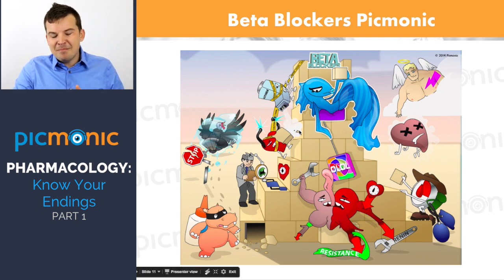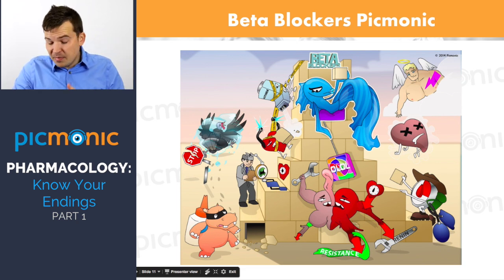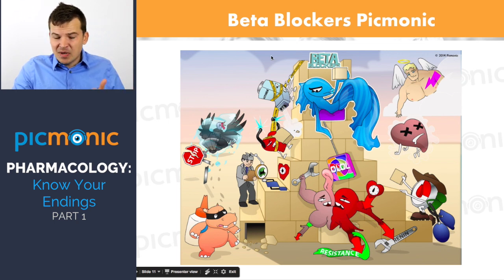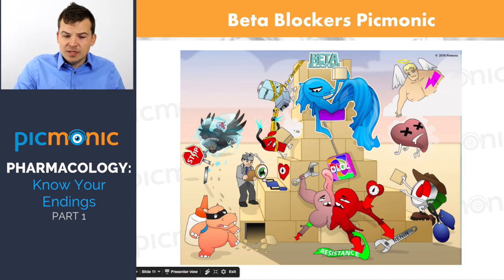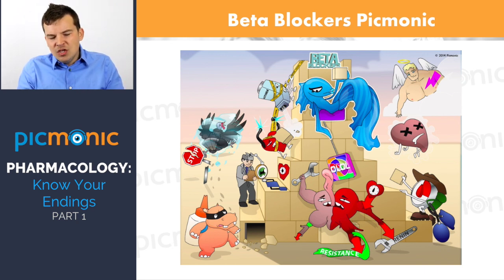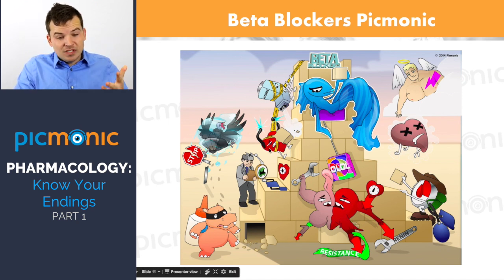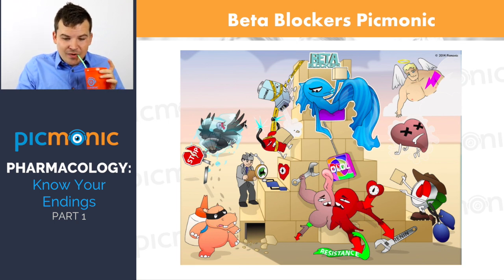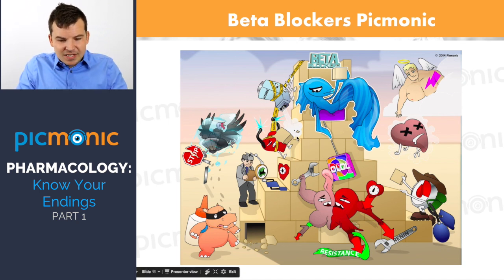Because of the beta blocker, it masks those signs of hypoglycemia. Also important: do not give a beta blocker to a patient with a heart block, or to patients with asthma because it can cause bronchoconstriction. Almost every drug should not be stopped cold turkey — you want to taper them down, especially beta blockers and steroids.